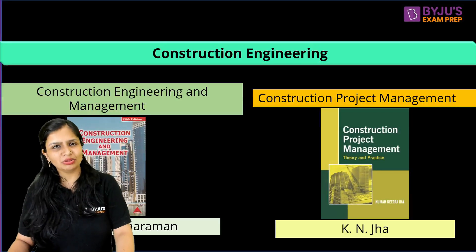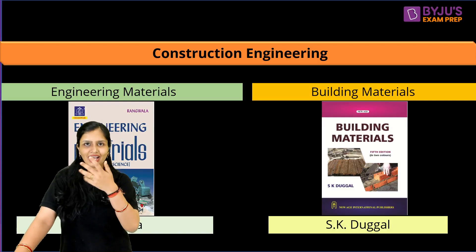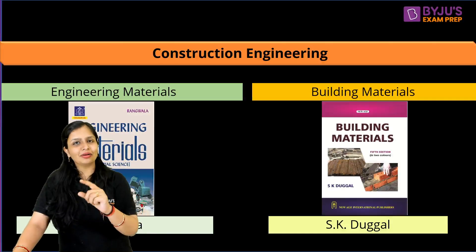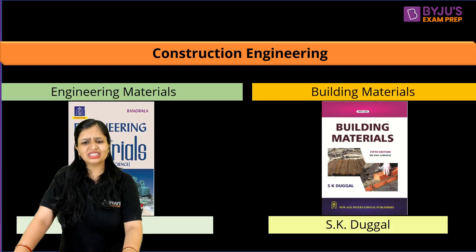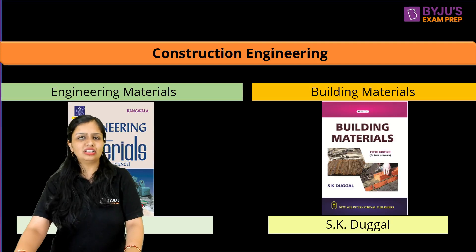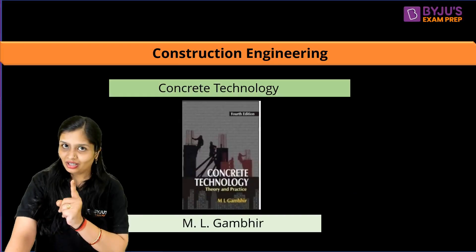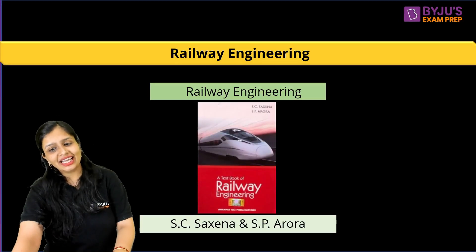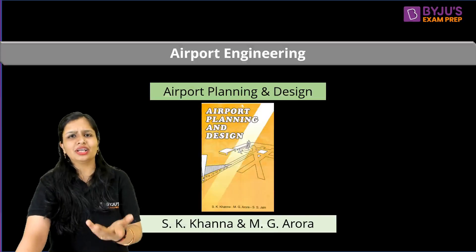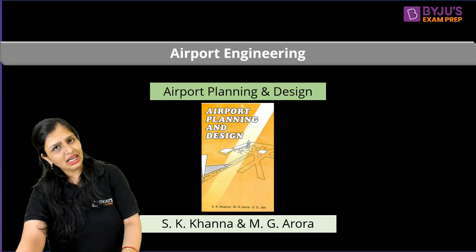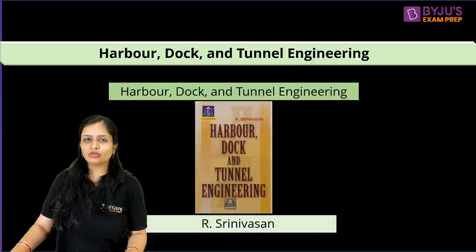For Construction Engineering and Management, I prefer Dr. S. Sitaraman and KN Jha — it's a pretty nice book. For Engineering Materials, Rangwala and SK Duggal are both good — Rangwala is written in a very easy, breezy manner. For Concrete Technology, you can go for Sushil Kumar, MS Shetty, or ML Gambir — I personally liked ML Gambir. For Railway Engineering, SC Saxena and SP Arora are available. For Airport Planning and Design, SK Khanna and MG Arora's book is there. For Harbor, Dock and Tunnel Engineering, there is a book by R. Srinivasan.